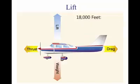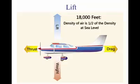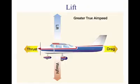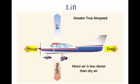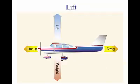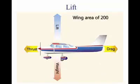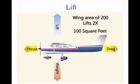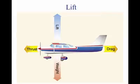At an altitude of 18,000 feet, the density of the air has one-half the density of air at sea level. In order to maintain its lift at a higher altitude, an aircraft must fly at a greater true airspeed for any given angle of attack. Warm air is less dense than cool air, and moist air is less dense than dry air. Lift varies directly with the wing area. A wing with an area of 200 square feet lifts twice as much at the same angle of attack as a wing with an area of 100 square feet. For most situations, the pilot controls lift and velocity to maneuver an aircraft.